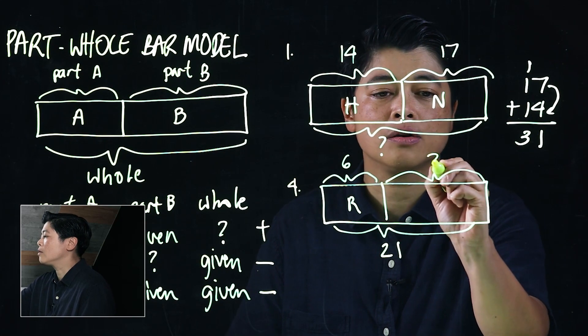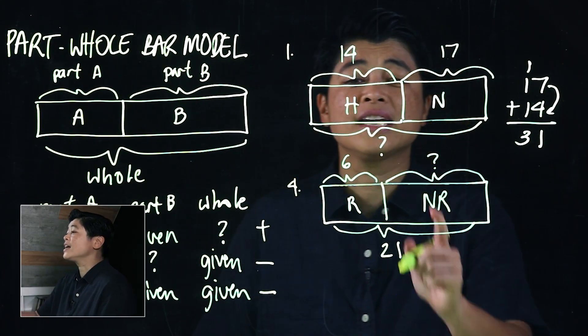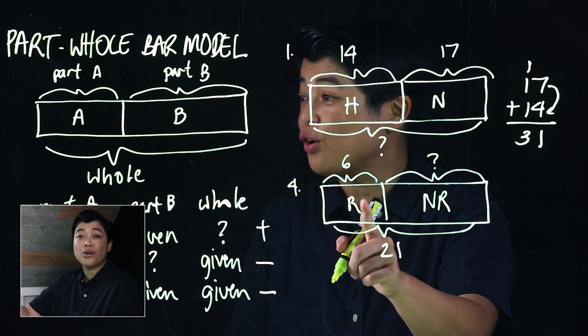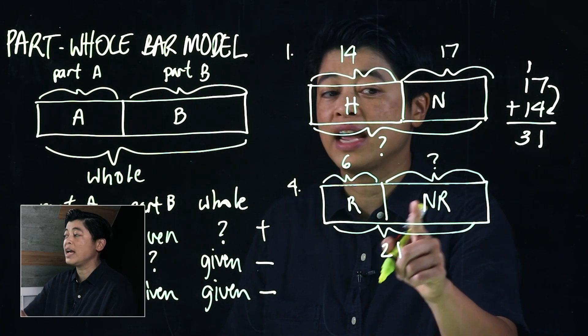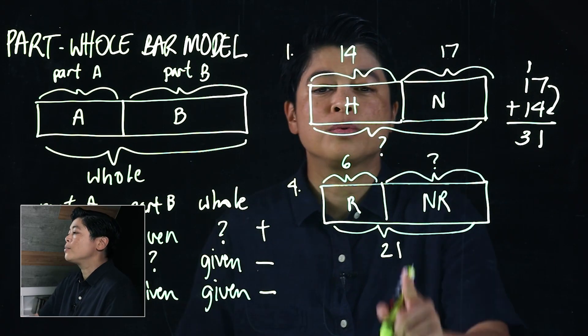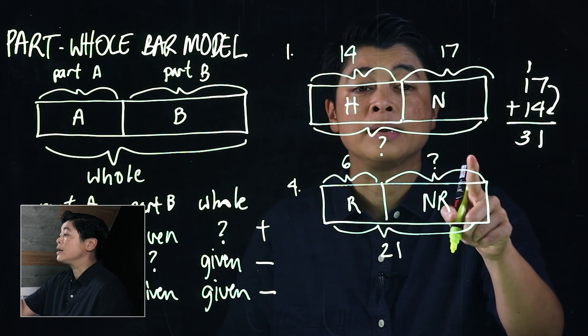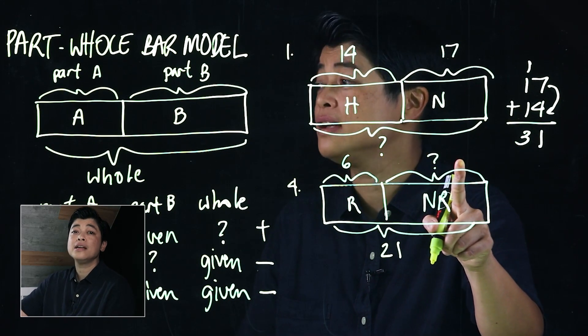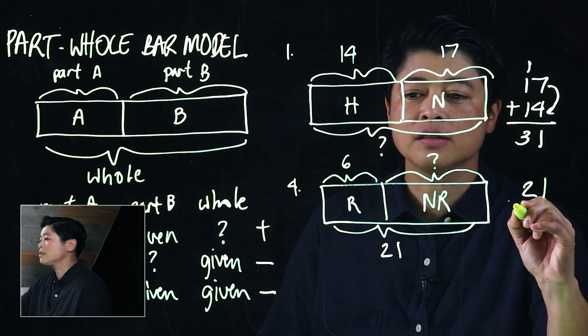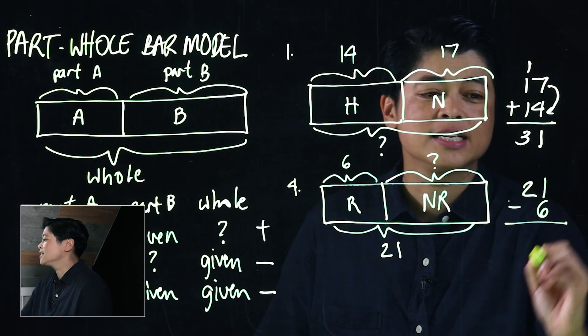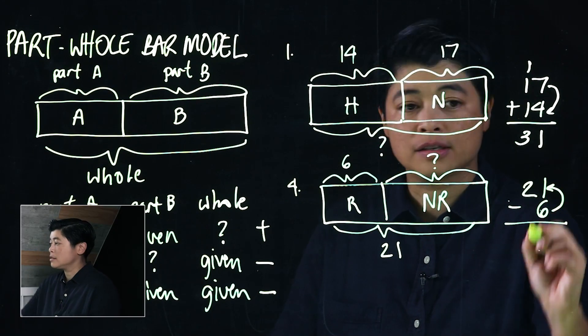This is 6 rotten, and the question is how many are not rotten. It's hard for the kids to write rotten, so R is fine. Hard for them to write not rotten, so NR is fine. We're given the whole, we're given the first part, so we're missing the second part. This will be subtraction. Therefore the bigger number, 21, is on top minus the 6.